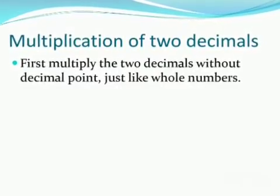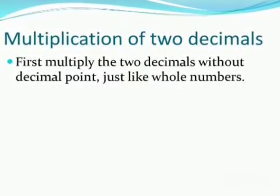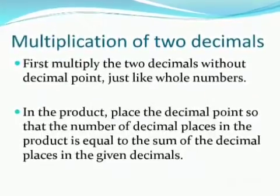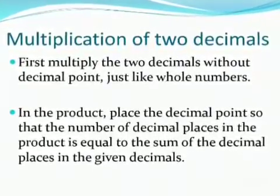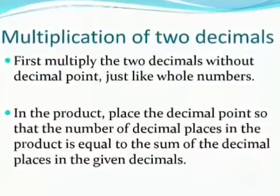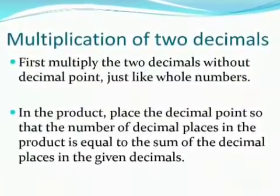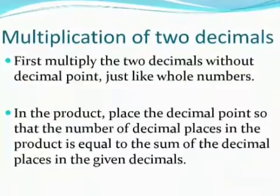For this, remember two things. First, multiply the two decimals without the decimal point, just like whole numbers. In the product, place the decimal point so that the number of decimal places in the product is equal to the sum of the decimal places in the given decimals.